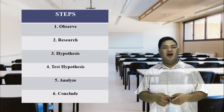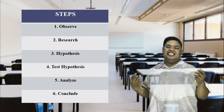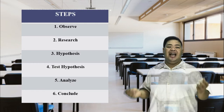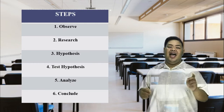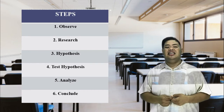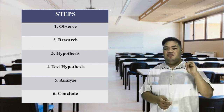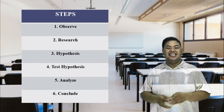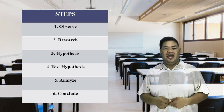This time, let us talk about the steps of scientific method. Scientific method is a logical and rational order of steps for answering questions about the world around us. It relies upon data and involves key processes like: observing or making observation, research, formulating hypothesis, test hypothesis, analyze, and conclude.